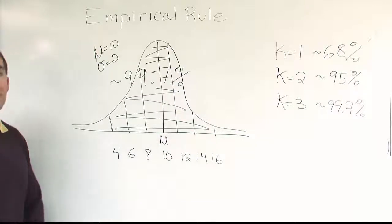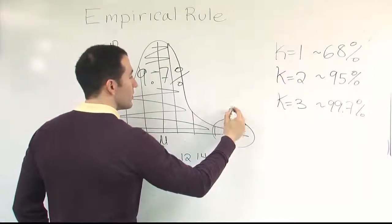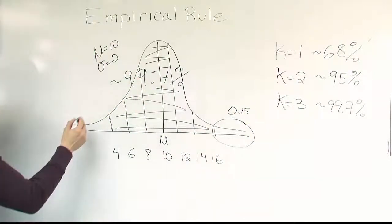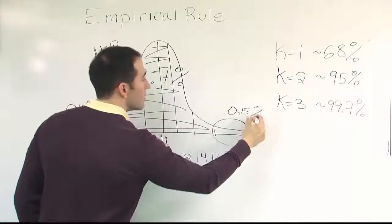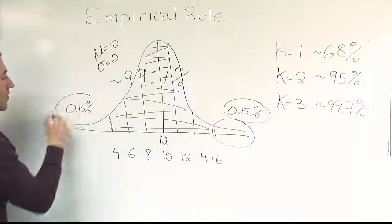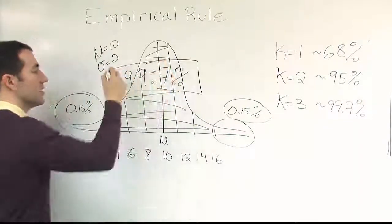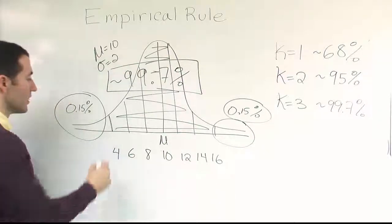So from here to here captures nearly everything. There's a very tiny bit here, 0.15% out there, and on this end, 0.15% out here. A very small amount of area left outside of that span, but almost everything is located between minus three standard deviations and plus three standard deviations.